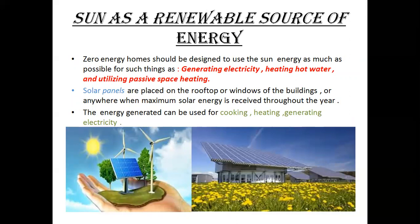The sun is a key renewable source of energy. Zero energy homes should be designed to use solar energy as much as possible for generating electricity, heating hot water, and utilizing passive space heating. Solar panels are placed on the rooftop or windows of buildings, or anywhere maximum solar energy is received throughout the year. The energy generated can be used for cooking, heating, and generating electricity.